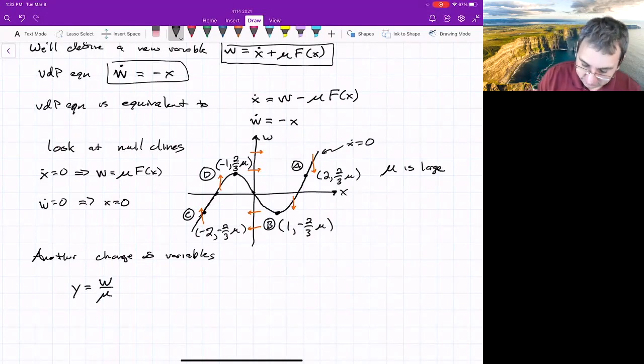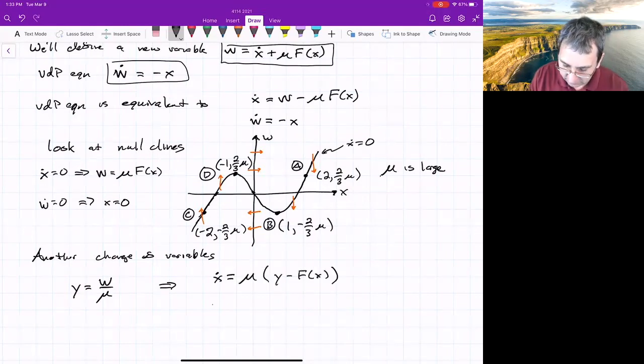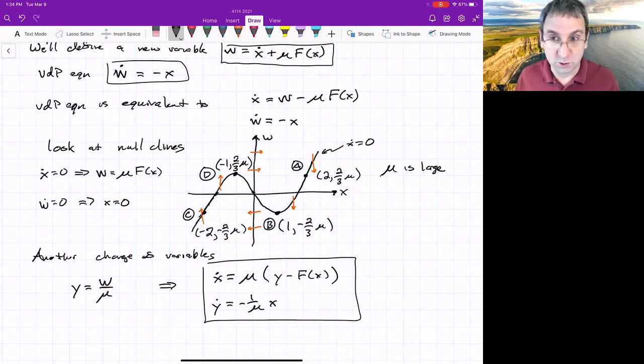Now, when we do that, it changes our ODEs. What do we get? We'll get x dot equals, we get an overall, we get mu y minus f of x. And then y dot is negative one over mu x. So these are the variables that we'll use.